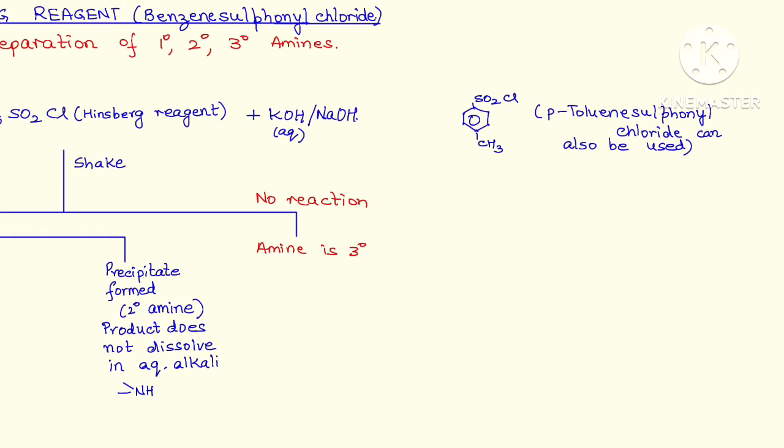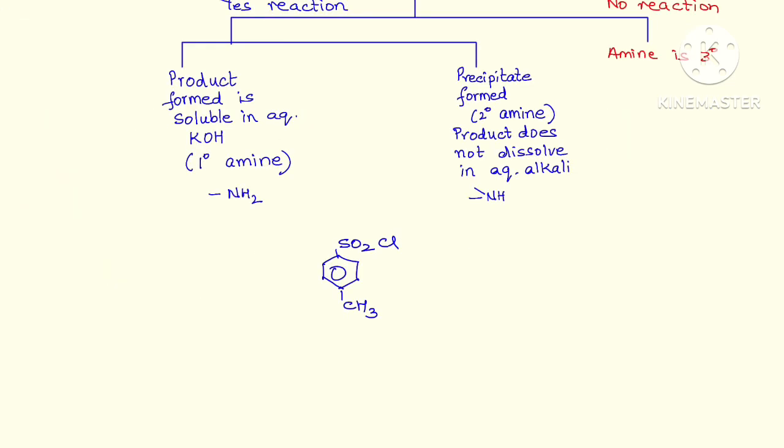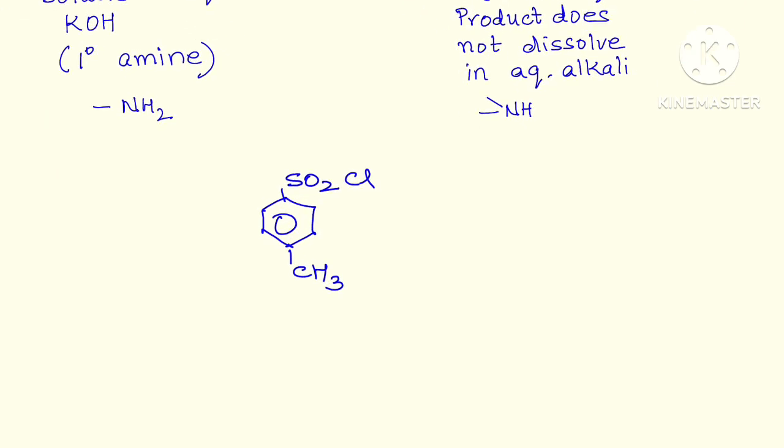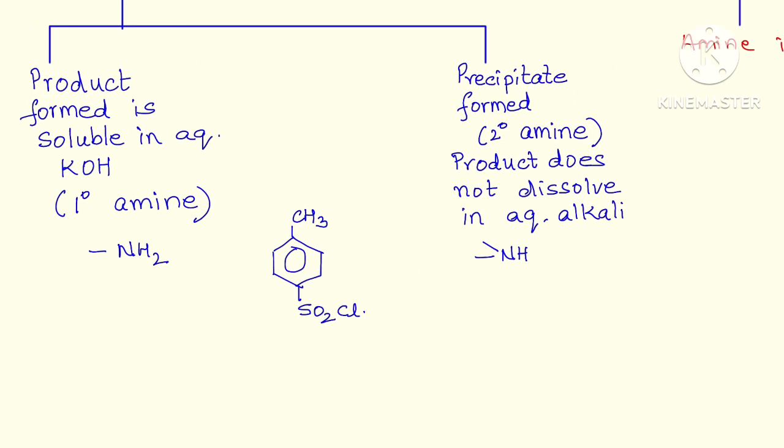So we have the compound paratoluene sulfonyl chloride. What is paratoluene sulfonyl chloride? First, draw the structure of toluene. Here we have C6H5CH3. Paratoluene sulfonyl chloride means opposite to each other, sulfonyl chloride. As simple as that. This also gives us the same observations as we have seen in the case of Hinsberg reagent.